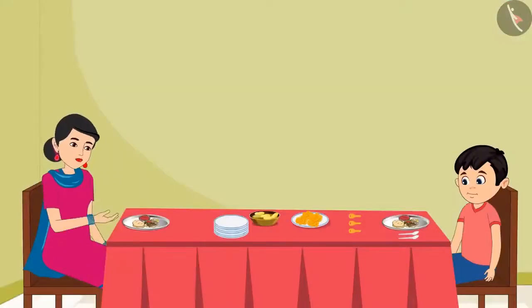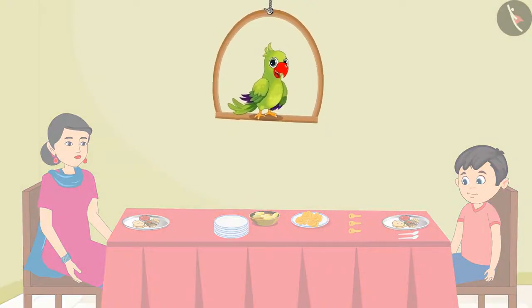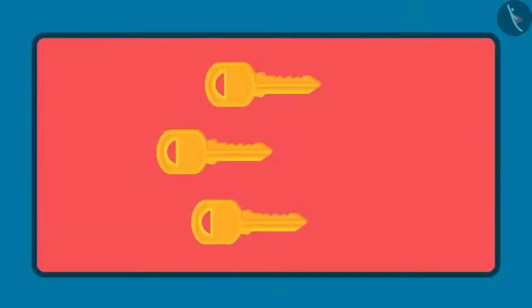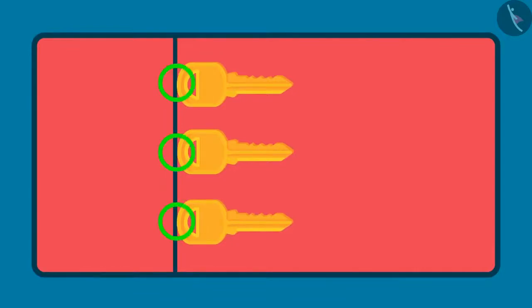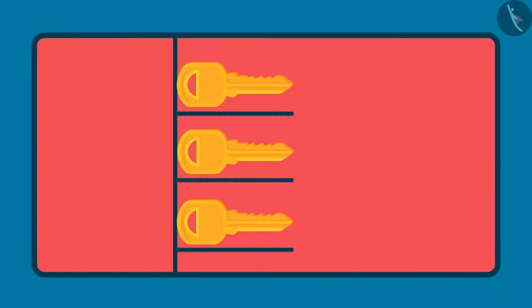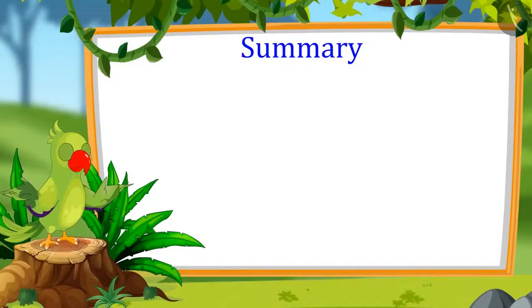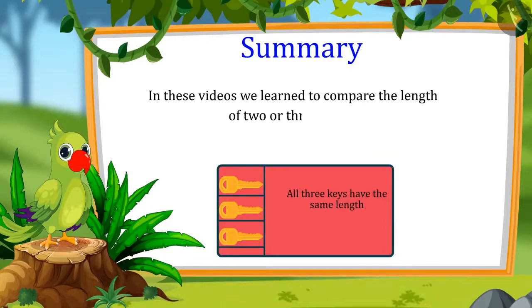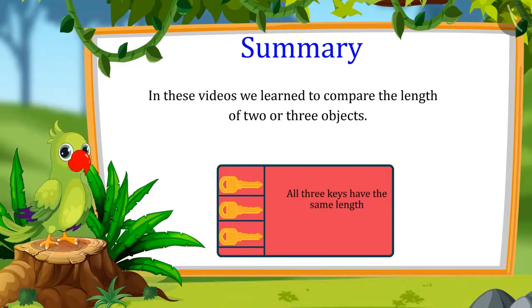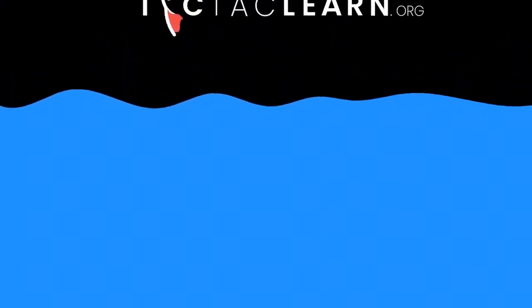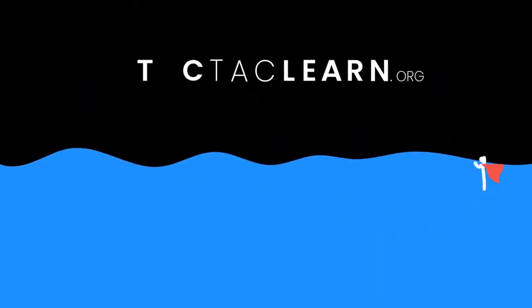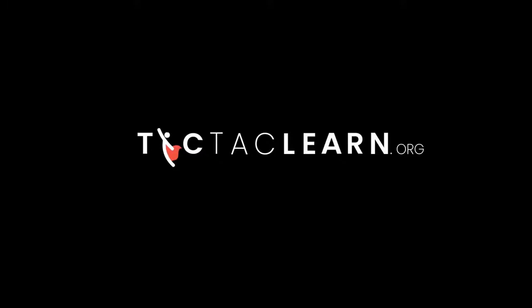Mummy says, 'Yes Chotu, very good.' So kids, now you also won't make a mistake in comparing the length of objects like Chotu. Always remember: before comparing the length of objects, first keep the objects together so that one end of all the objects is aligned, and then compare their lengths. That's all for today. In these videos, we learned how to compare the length of two or more objects.